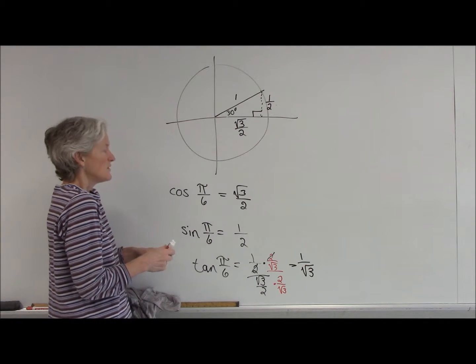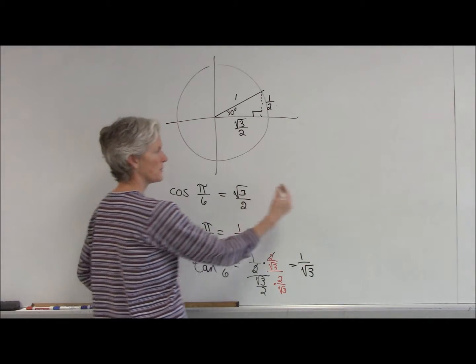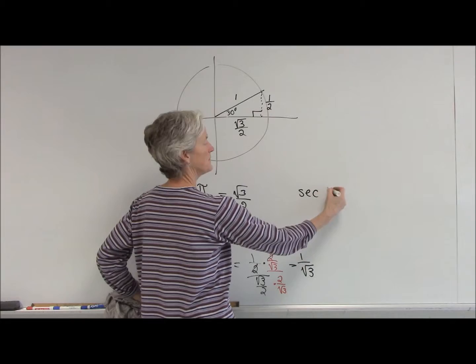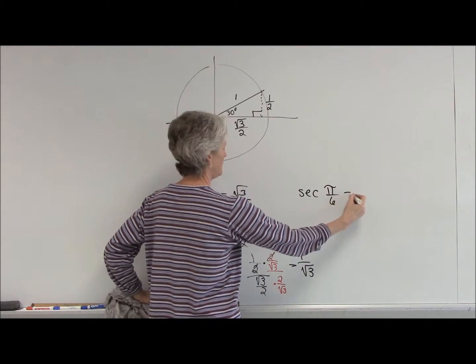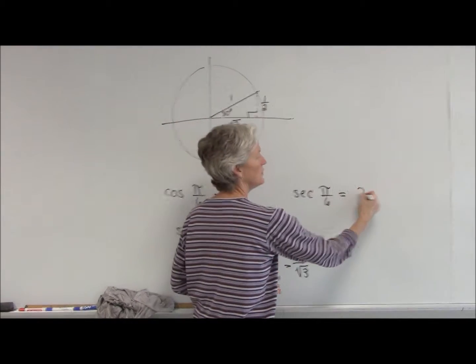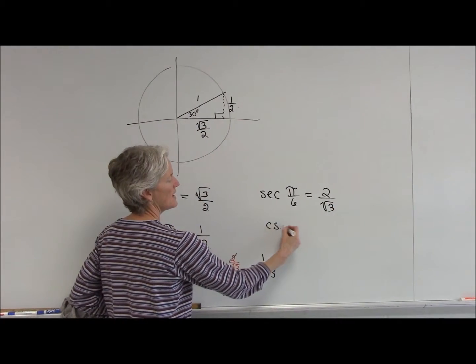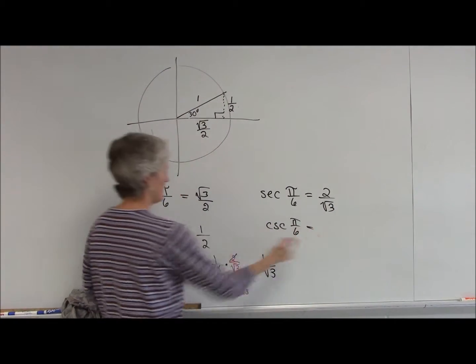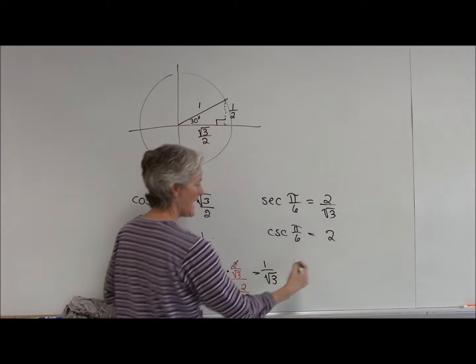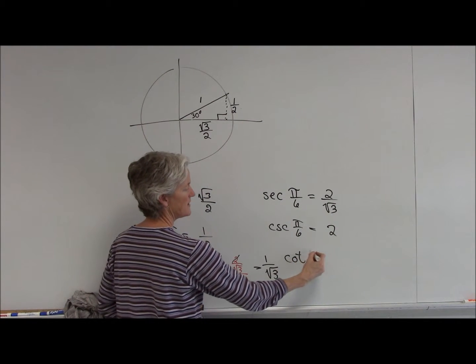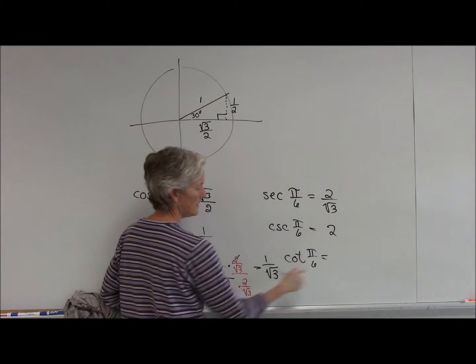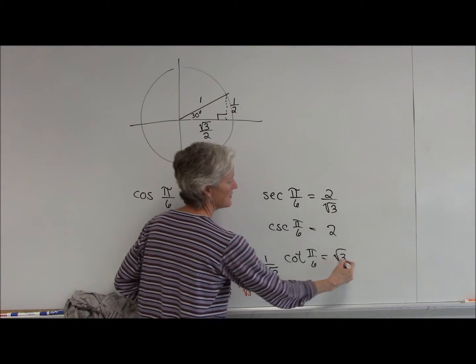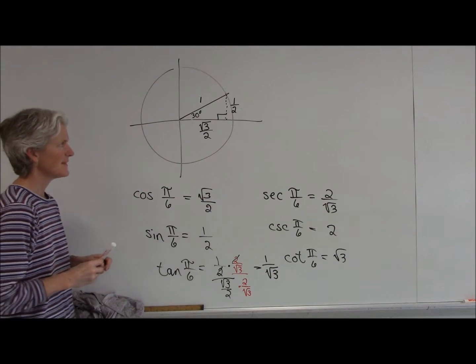And, again, your reciprocal functions. Reciprocal of cosine is secant. So, the secant of pi over 6 is just 2 over the square root of 3. Cosecant of pi over 6, 2 over 1. And the reciprocal of tan is... cotan. Yeah.